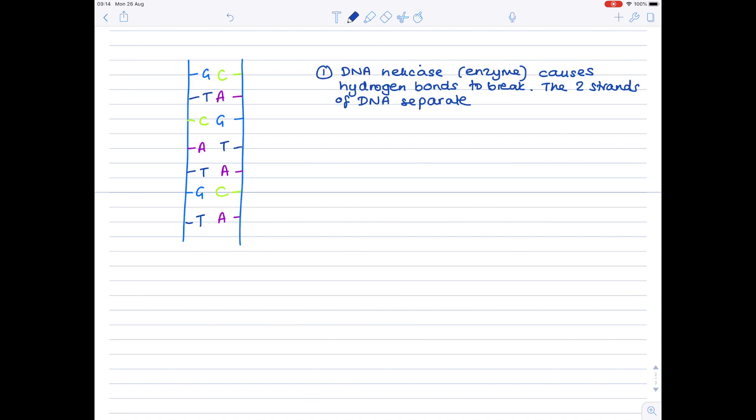So what does this actually look like? Well, we'll use the same DNA so that we don't get confused. Just remember that these hydrogen bonds are found here—there's two between every thymine and adenine and three between guanine and cytosine. What DNA helicase does is it causes these bonds to break. So as you can see in the second diagram, we've got separation of the two strands.